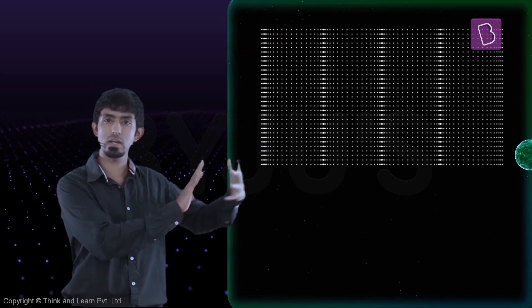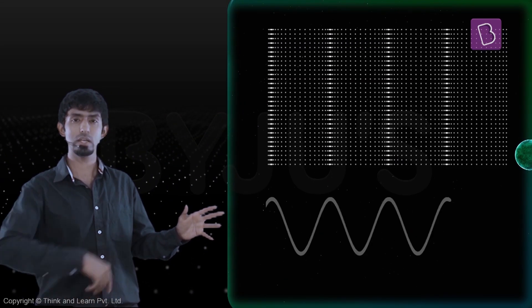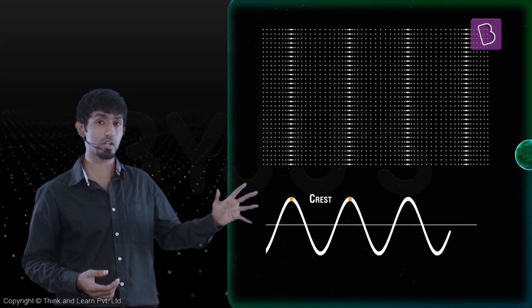So we know that sound is a set of compressions and rarefactions, as you can see. A better way to represent that is as waves in this format, where you can see each compression as a peak and each rarefaction as a trough.